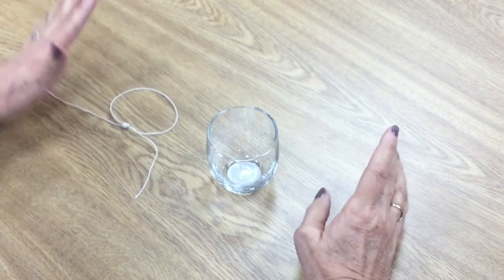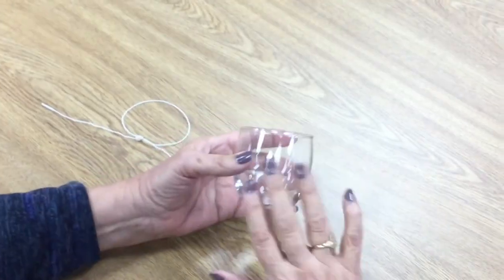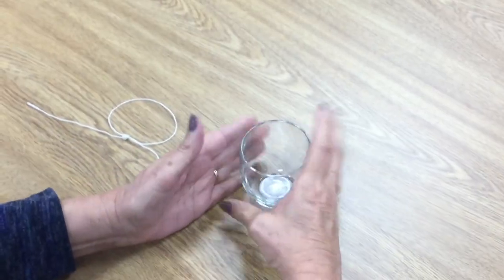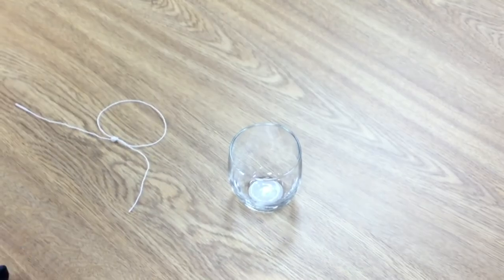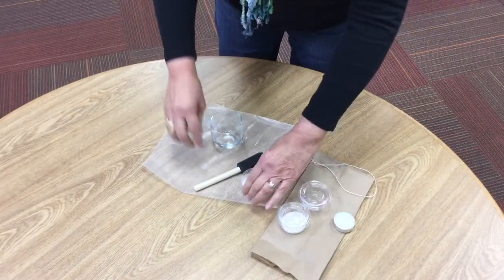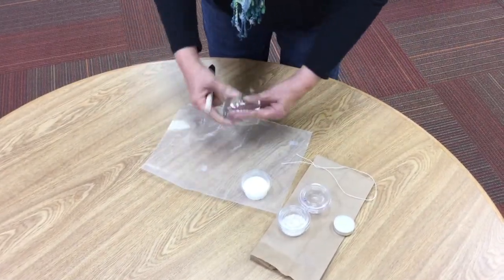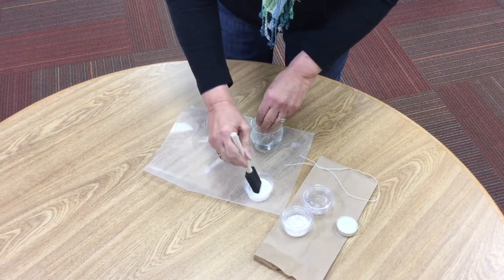Set that aside for a little bit later, and then we're going to move on to painting this with the Mod Podge. The first step is to put Mod Podge on the outside of your glass. Put a small amount on it—not the bottom, just the edge, just the top of it.